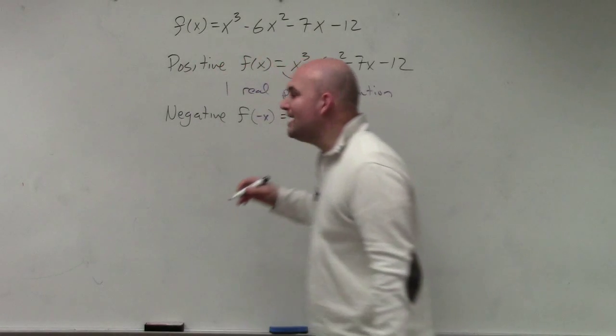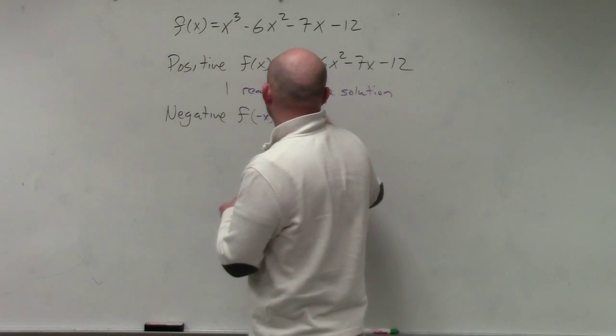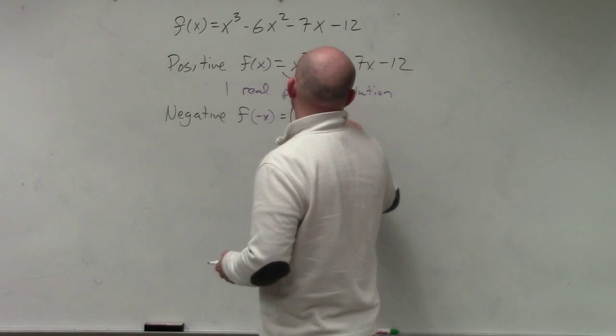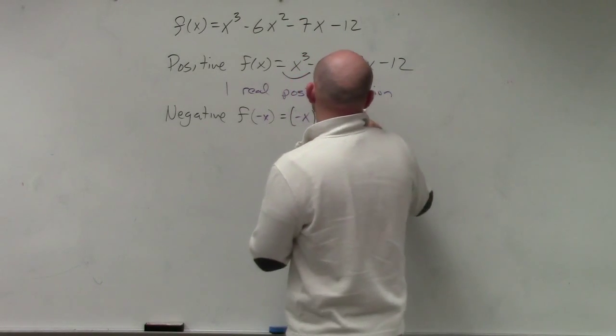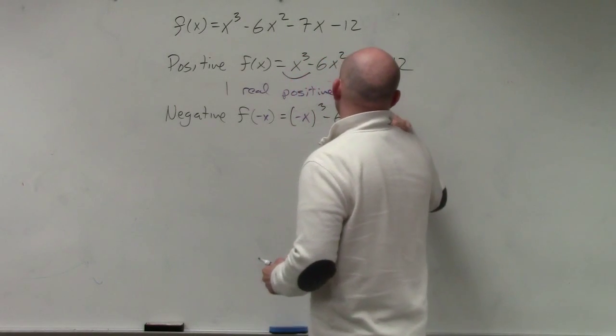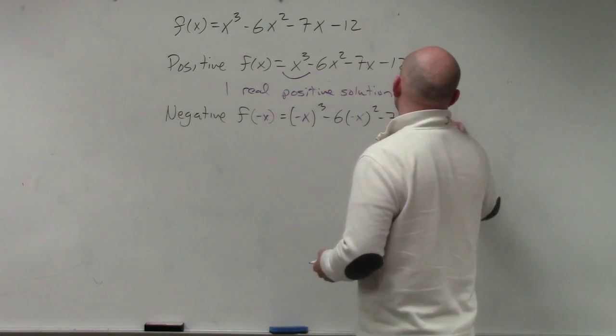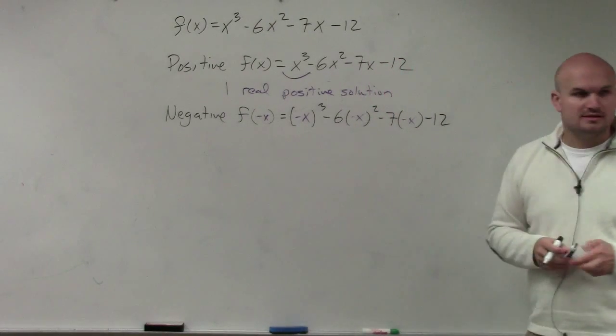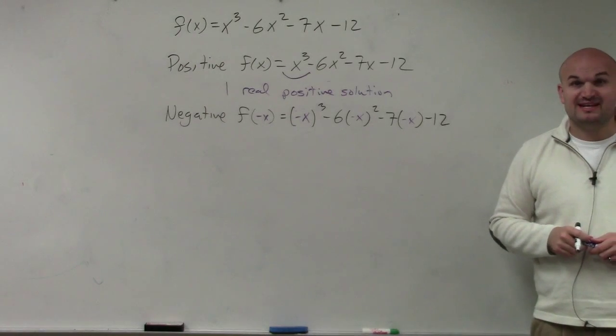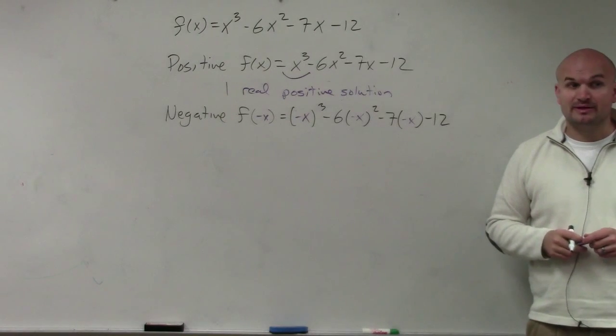So when you're doing f of negative x, you have negative x cubed minus 6 times negative x squared minus 7 times negative x minus 12. Is everybody OK with that step? Speak now or forever hold your peace. Everybody's OK.